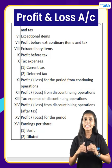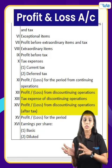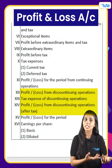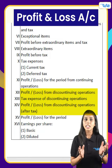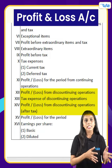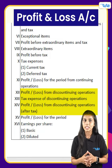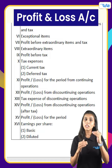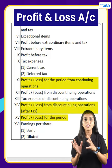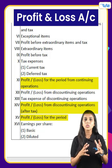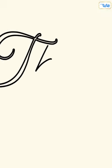After this, we need to calculate profit or loss from discontinuing operations after giving tax effect if any, and then the total of both gives us the final profit or loss for the period. Thank you.